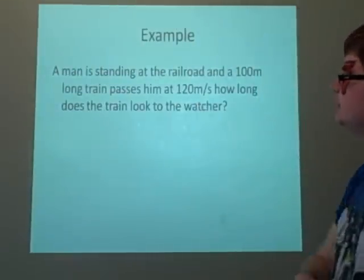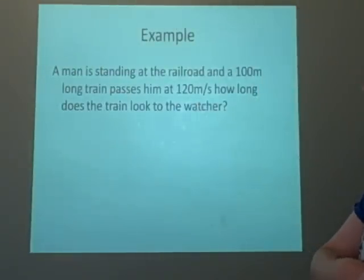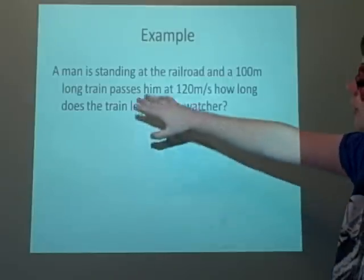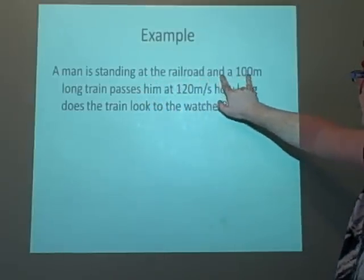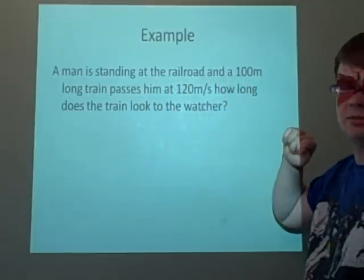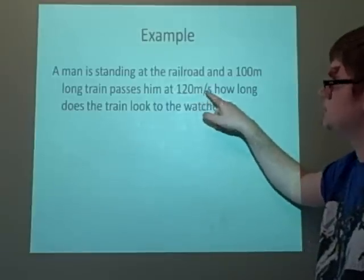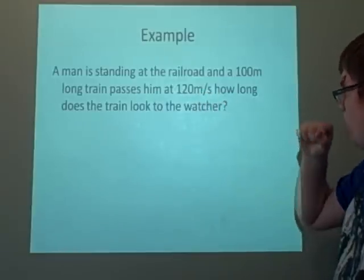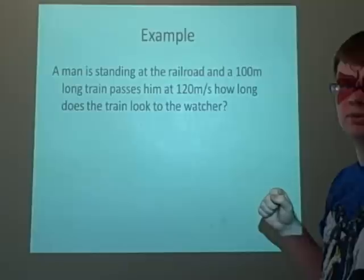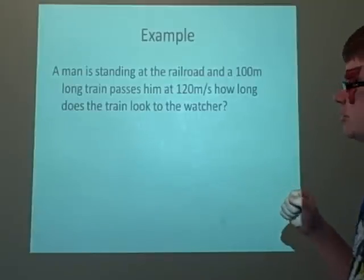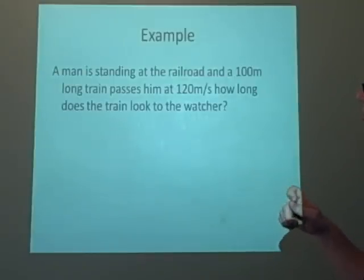So, an example. This is how I can explain it best. So we've got a man is standing at the railroad, and a 100 meter long train passes him at 120 meters a second. So I think that's about 200 miles an hour, probably a bit less, quite fast. How long does the train look to the watcher?